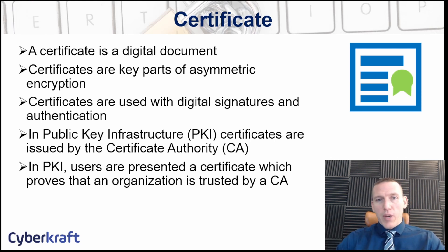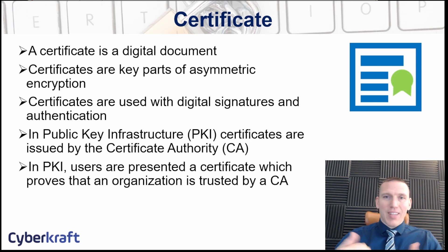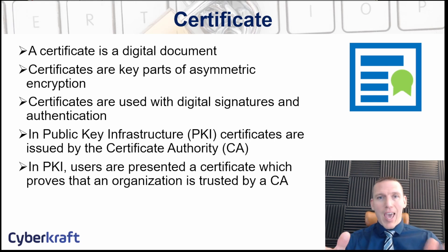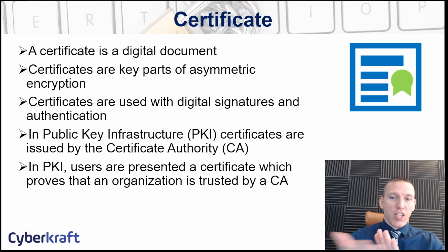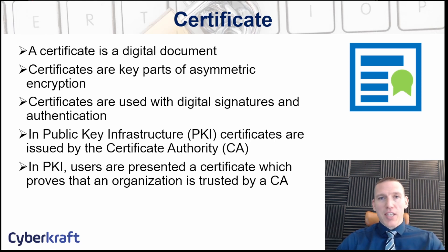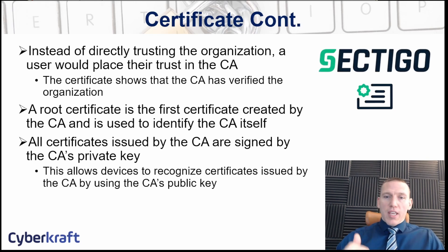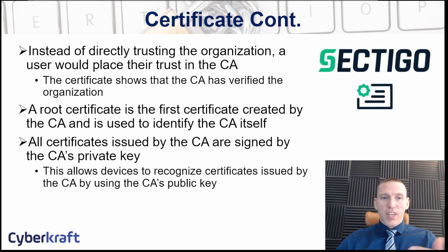The waiter or waitress is not going to trust that you are claiming the age that you're stating — they're going to trust a third party, which would be the state government, to issue that driver's license with the relevant information. The same thing happens with public infrastructure: two entities don't necessarily trust each other, they may have never met, but they would trust the certificate authority, the issuer of the digital certificate. So you're not trusting the organization or entity itself — you're trusting the certificate authority as that trusted third party.